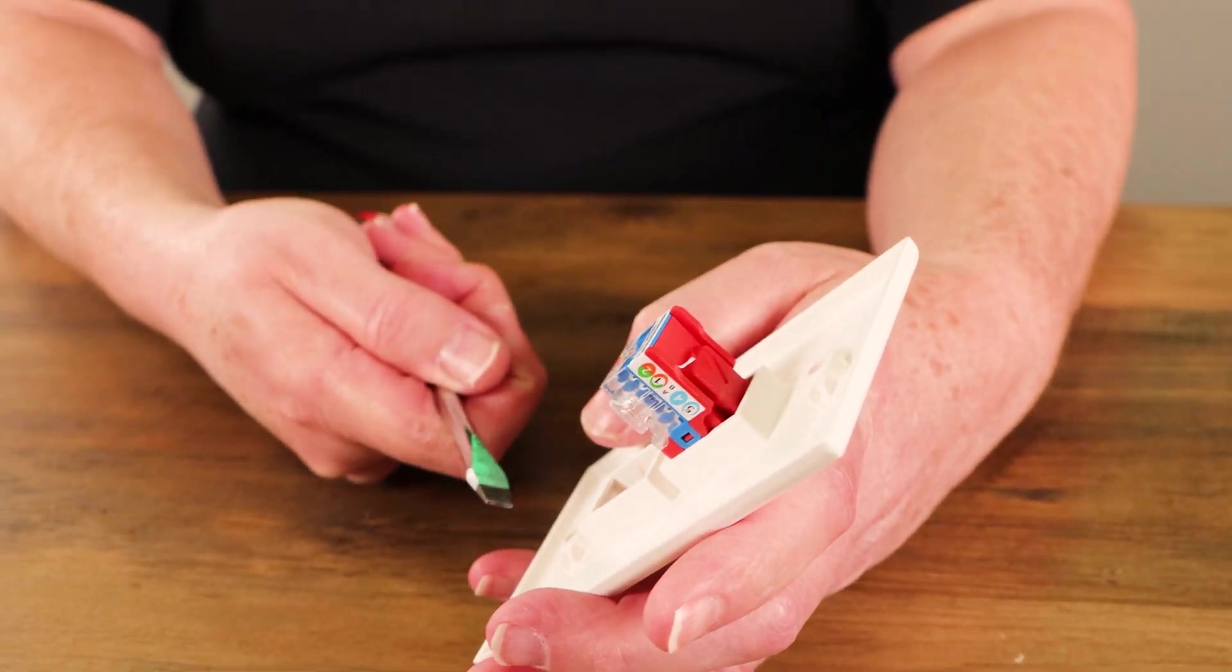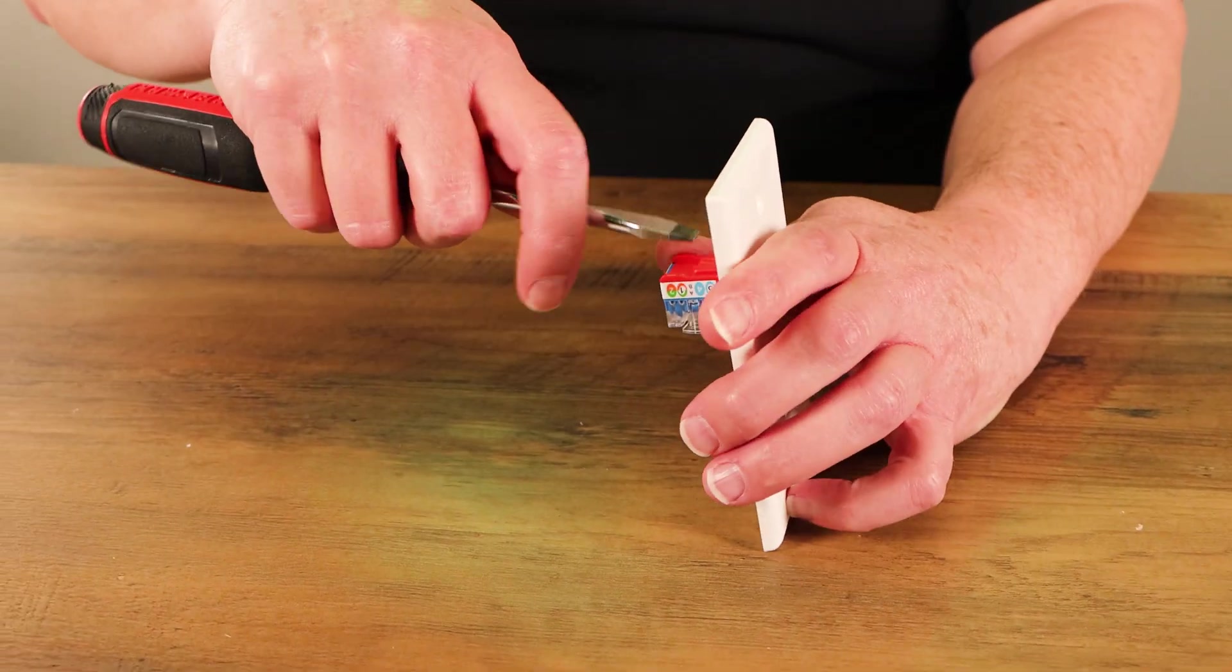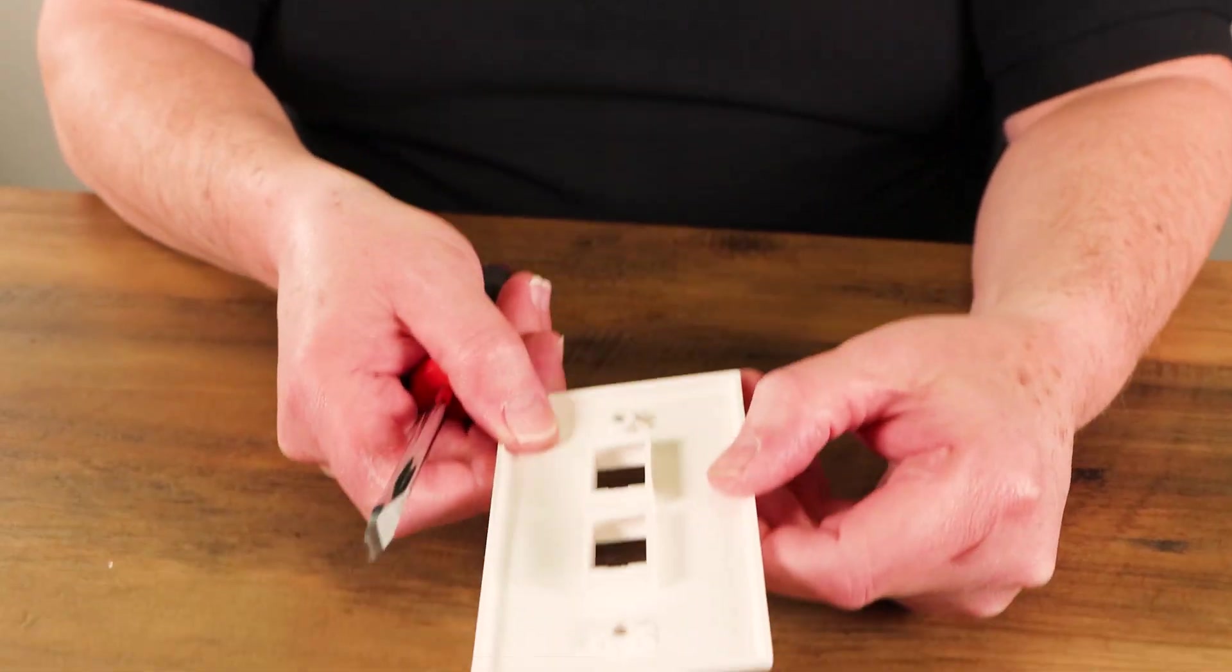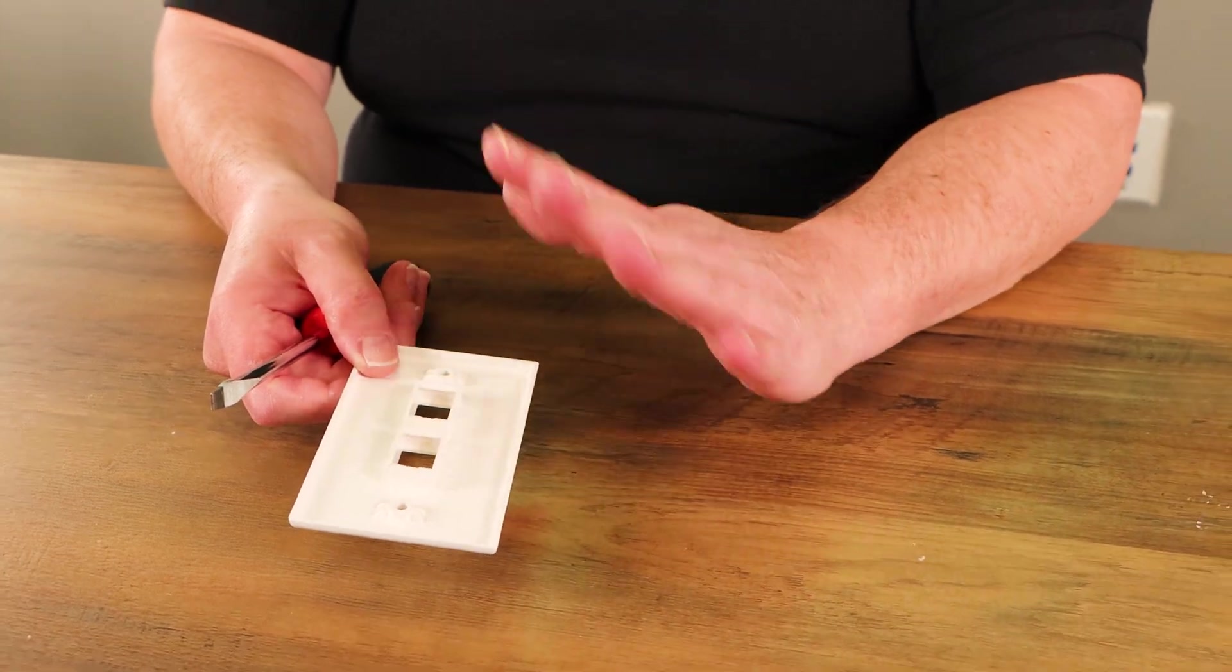And there we go. So as you can see, it's very easy to accidentally gouge yourself. So be careful, watch what you're doing. So that's how you deal with wall plates. Again, if you've got a better way, I want to hear about it. And I'll even film it.